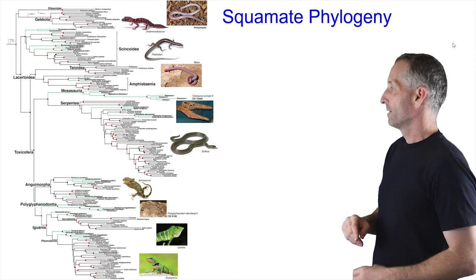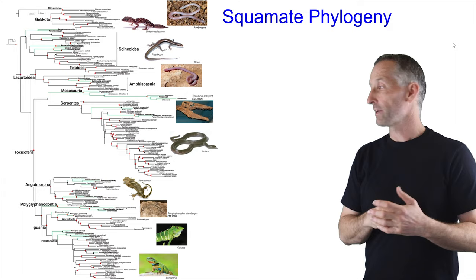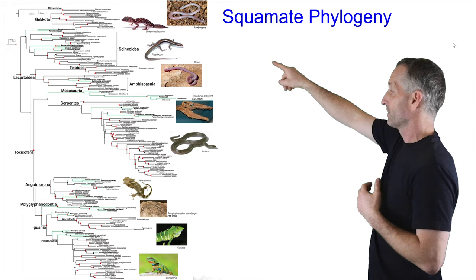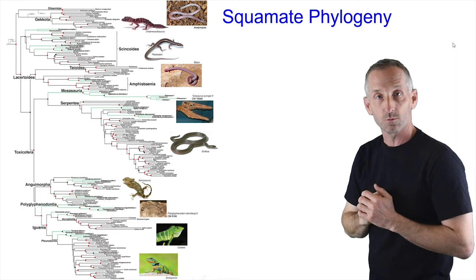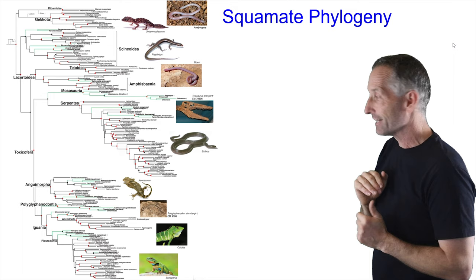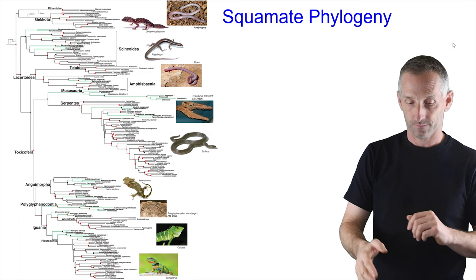The squamate group is quite diverse. Once outside the tuatara branch, there are many different groups represented in a modern phylogeny, including geckos, skinks, amphisbaenians, snakes, and a bunch of other lizards. It's a very complex phylogeny with a lot of variation.